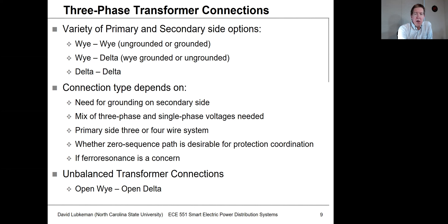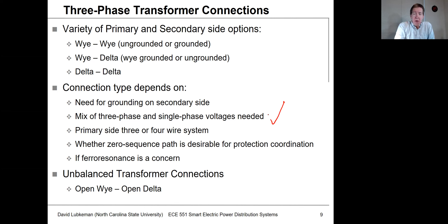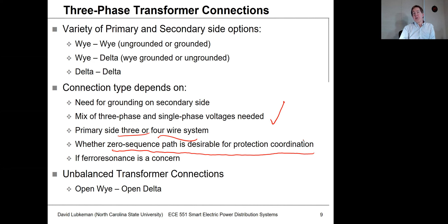The connection type you want to use in the field depends on your grounding needs — if you need to ground on the secondary side, you'd use some sort of grounded-Y connection. It also depends on what types of voltages you need, whether the primary has a four-wire or three-wire supply, and importantly, what you want for the zero-sequence path: what do you want to happen with ground currents if there's a fault on the primary or secondary side? This overlaps with protection practices.